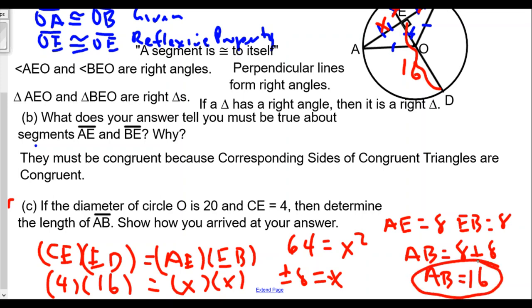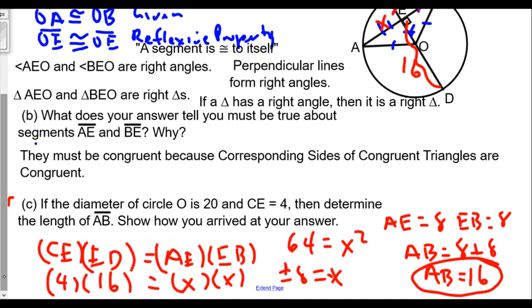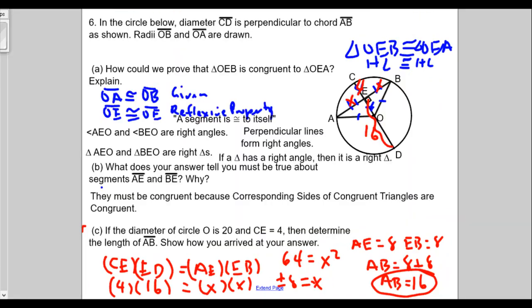We used our formula about the product of the pieces of the first chord equal to the product of the second chord when two chords intersect. Remember that a diameter is a chord. There's a lot of different parts here with proof involved, and we had to justify our answers and give reasons, then use our work to solve the problem.